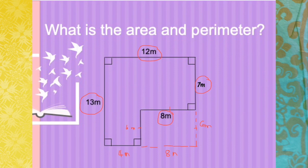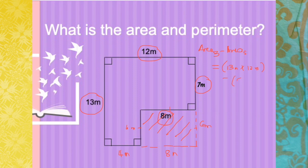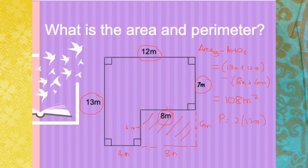Now how do we find the area of this shape? The area would be the area of the bigger shape minus the area of the smaller shape. The bigger shape would be 13 meters times 12 meters, minus the extended part which is 8 meters by 6 meters. So 13 times 12 minus 8 times 6 gives us the area of 108 meters square. For the perimeter, since we have extended and the sides are 6 and 6, the perimeter would be 2 of our 13 meters plus 2 of our 12 meters. So 13 times 2 is 26, and 2 times 12 is 24, which gives 50 meters.